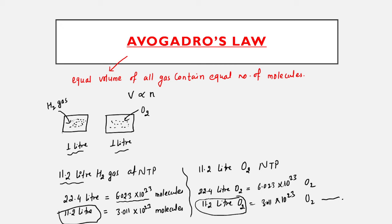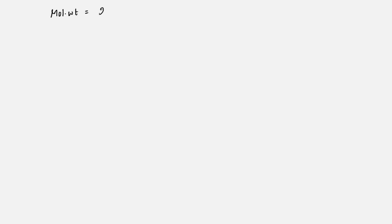Conclusion: 11.2 liters of hydrogen and 11.2 liters of oxygen both contain equal number of molecules — 3.011 × 10²³. This confirms that equal volumes of all gases contain equal number of molecules, verifying Avogadro's law. Now we move to another very important derivation: the relation between molecular weight and vapor density, which is: molecular weight = 2 × vapor density.